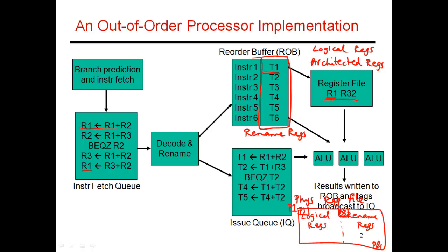When some instruction gets renamed, it picks a register from the rename pool — say P33. A result is produced and gets written into P33. Now when that instruction commits, instead of copying the value from P33 into P1, I keep that value in P33. I'll have a map table that says the committed value of R1, which was previously in P1, is now in P33. So I don't do any copies and I don't have to go update the issue queue entries either.